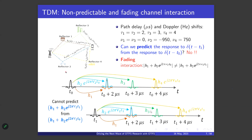The problem is that time-domain pulses are localized in the time domain but not in the frequency domain. Had these pulses also been localized in the frequency domain, the reflections from reflectors one and two would appear distinct.